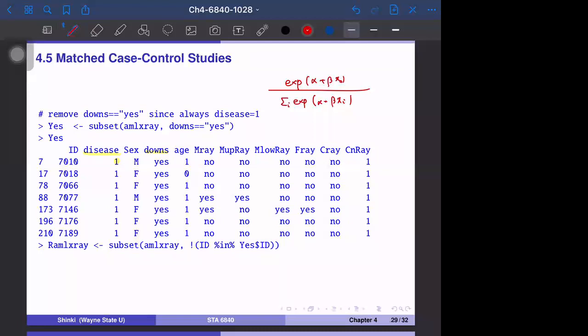If the case always has the probability of disease equal to 1, then the coefficient for disease becomes infinitely large to maximize likelihood. The estimation diverges, so we have to remove this variable first.